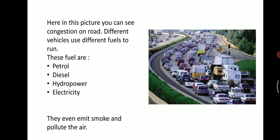Here, in this picture, you can see congestion on the road. Congestion means traffic — a lot of traffic means traffic jam. These vehicles use different fuels to run. Just as our body needs food to grow and work, in the same way these vehicles need fuels. These fuels are petrol, diesel, hydropower, and electricity. When they use such fuels, they also emit smoke and pollute the air.